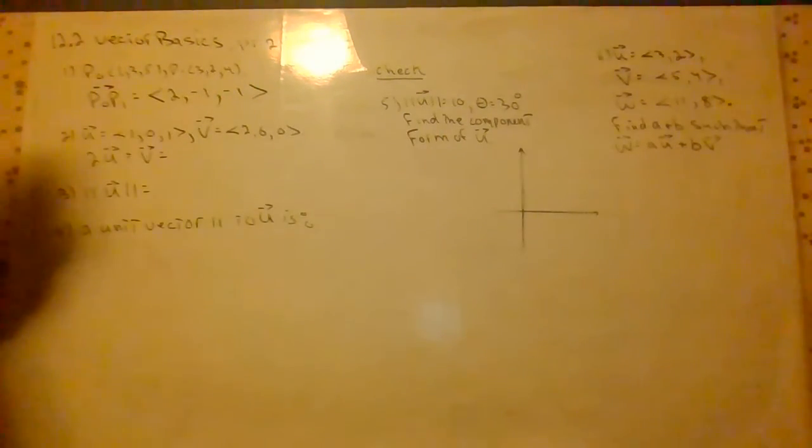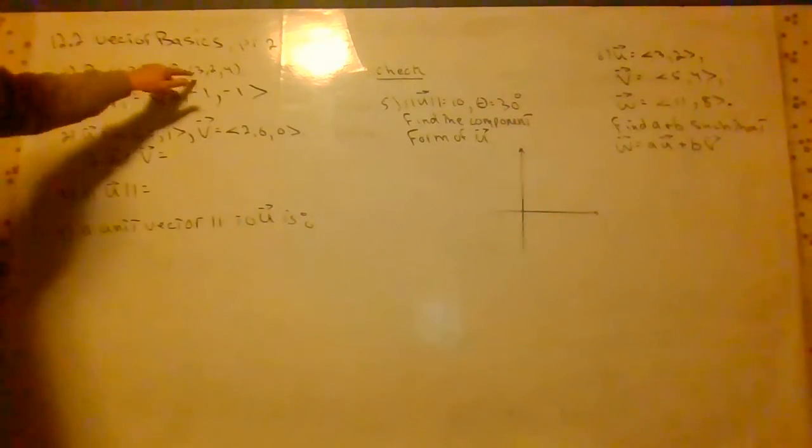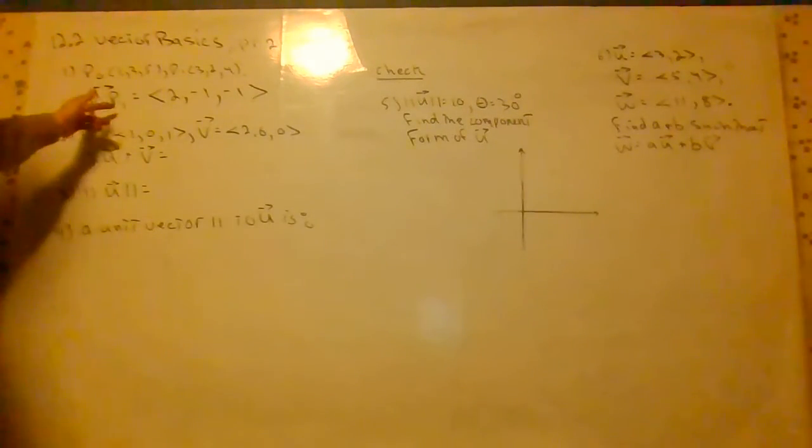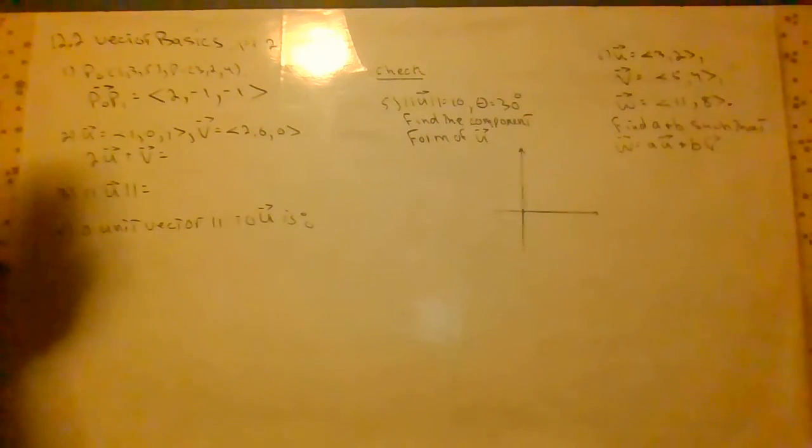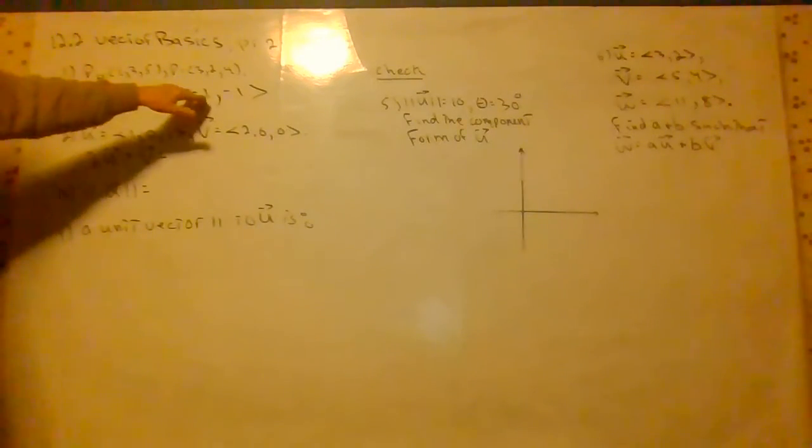You can also check visually. If we go from 1 to 3, X changes by 2. Go from 3 down to 2, negative 1. 5 down to 4, negative 1. It makes sense. If you reverse this, we subtract the other way. So just think of this as final minus initial. That's how you do this.